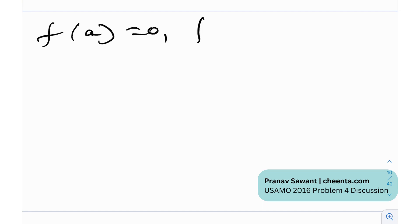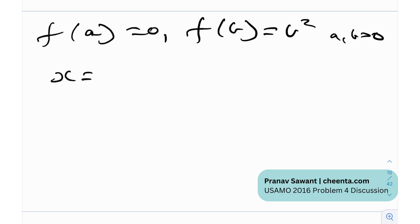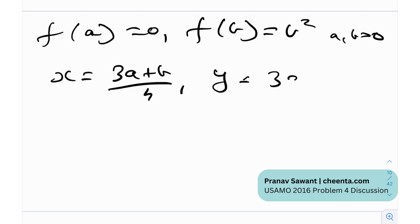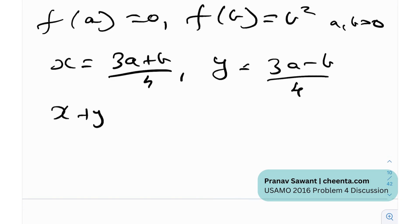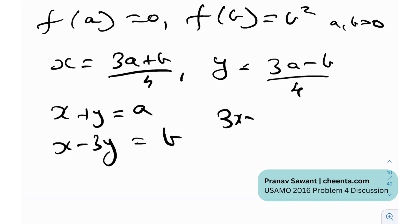For contradiction, let's consider f(a) = 0 and f(b) = b² for a and b greater than 0. That's the standard approach for the pointwise trap. I'm going to make a substitution: x = (3a + b)/4 and y = (3a − b)/4. The reason is that x + y = a, x − 3y = b (which appears in the question), and 3x − y = 2a + b (also in the question). So this is a neat substitution.